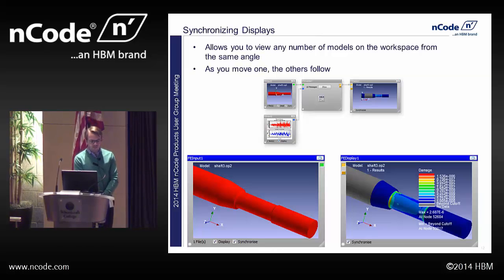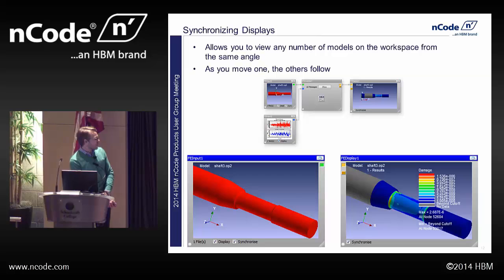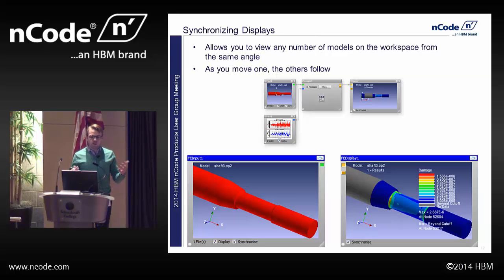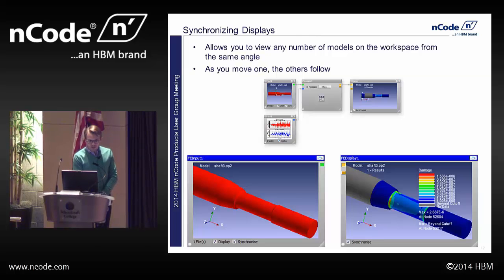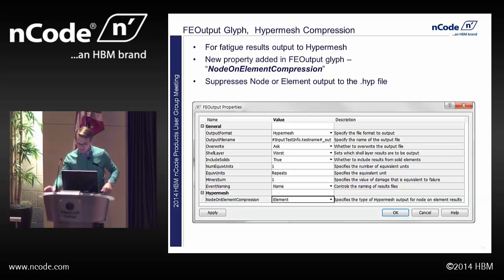Synchronizing displays is useful when you have several displays on screen and want to zoom into one area and have that view propagate to all others. In the very bottom corner of your FE input or FE display, there's a button called 'synchronize.' Check it on one display, then check it on all the others you want to sync. Any pan, zoom, or rotation on one will be mirrored on all synchronized displays.